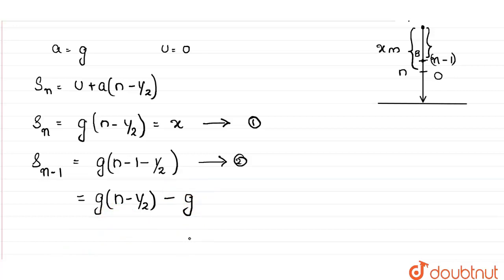So g into n minus half is equal to x. That is written in our first equation. So we can substitute x for g into n minus half. So x minus g.